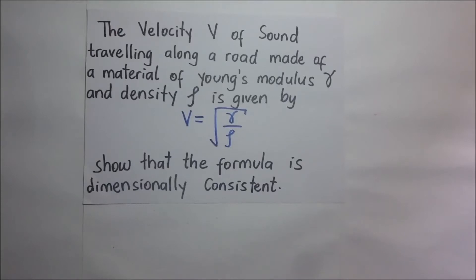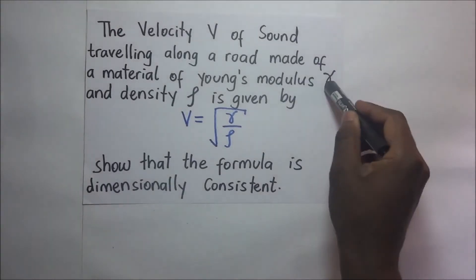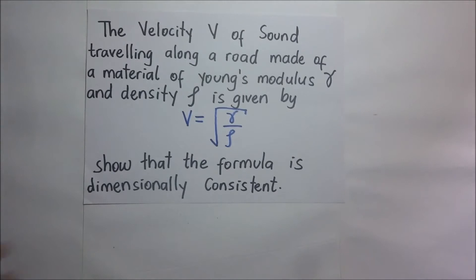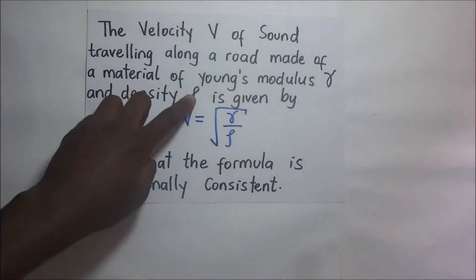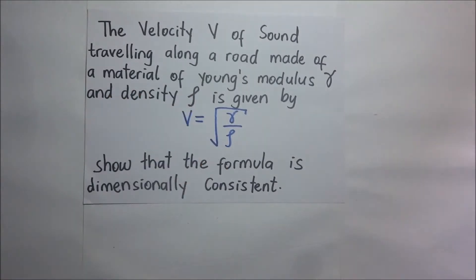The velocity V of sound traveling along a road made of a material of Young's modulus Alpha and density row is given by this formula. Show that the formula is dimensionally consistent.